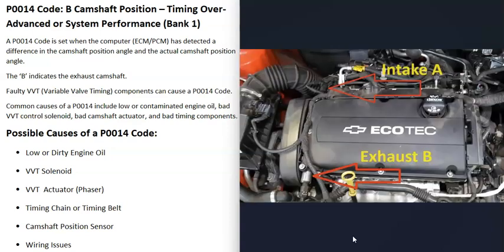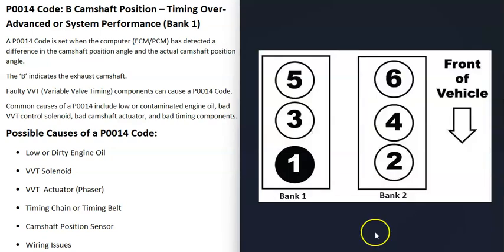The B camshaft points to the exhaust camshaft — the A camshaft is the intake and the B camshaft is the exhaust. If you have a four-cylinder engine, you'll only have one bank and camshaft B is on the exhaust side. If you have a V6 or V8, the engine has two banks, and bank one is always the side with the number one cylinder.